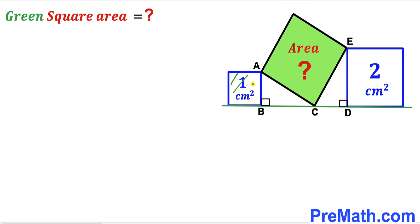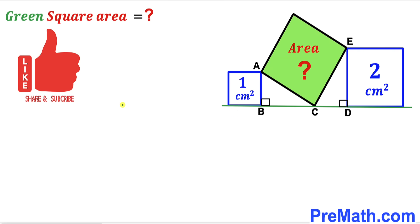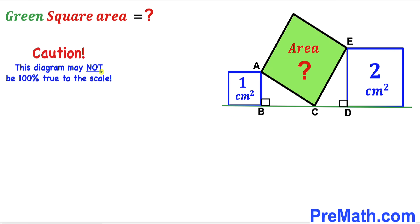In this video we have two blue squares along with a green shaded square put together as shown in the diagram, such that the area of the smaller blue square is 1 cm² and the area of the larger blue square is 2 cm². Our task is to calculate the area of the green shaded square. Please note that this figure may not be 100% true to scale.